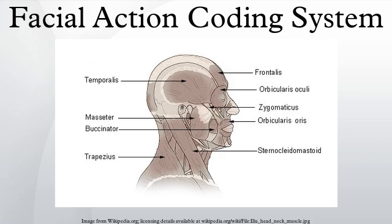Ekman, Friesen, and Joseph C. Hager published a significant update to FACS in 2002. Movements of individual facial muscles are encoded by FACS from slight, different instant changes in facial appearance. It is a common standard to systematically categorize the physical expression of emotions, and it has proven useful to psychologists and to animators.